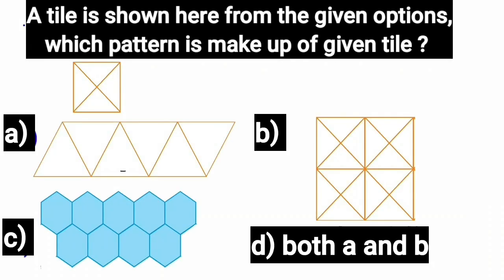Question number 3, a tile is shown here. From the given options, which pattern is made up of the given tile? Look carefully kids, observe the tile. It is a very interesting mental activity. Let's match the tile with the given patterns. First, we will start from option A, match the tile with option A, but it doesn't match. Now with option B, then option C. We have noticed that it doesn't match with option A and C.